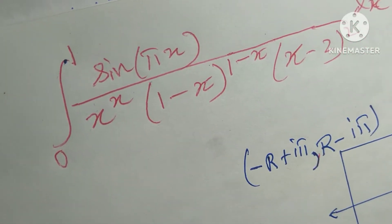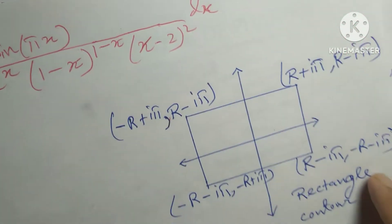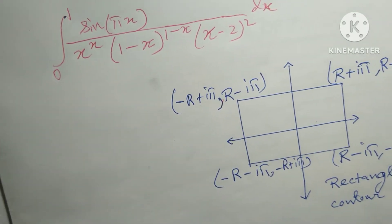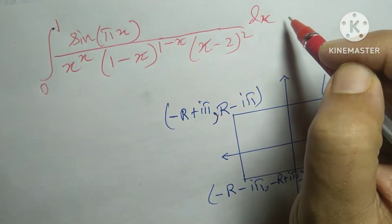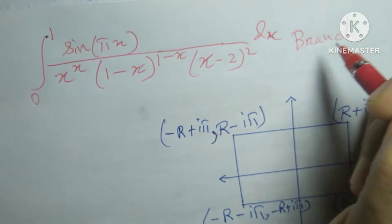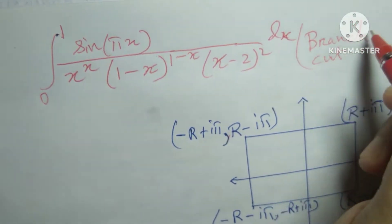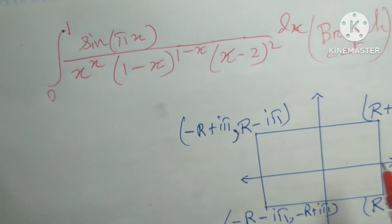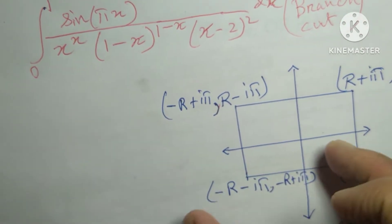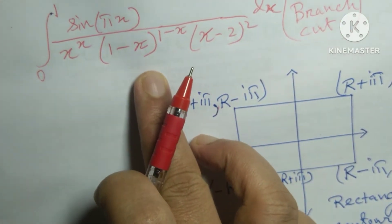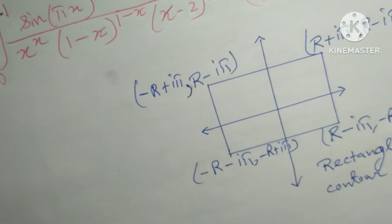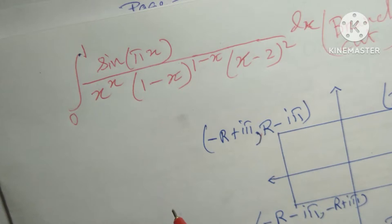Hello dear friends, welcome to my channel. Today's discussion is a contour integral problem with branch cut again. This problem is also the same type, but I have drawn a hyperbola because I convert it using hyperbolic functions — e to the power expressions.